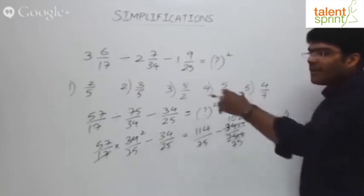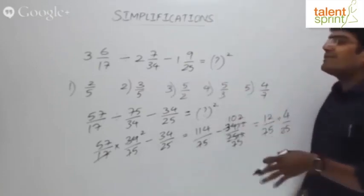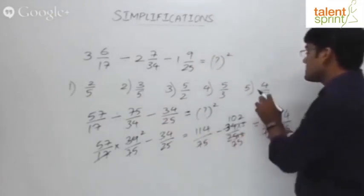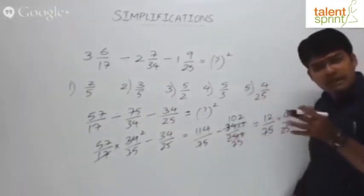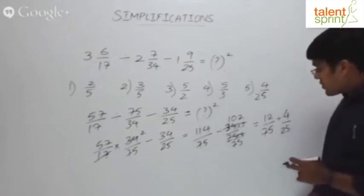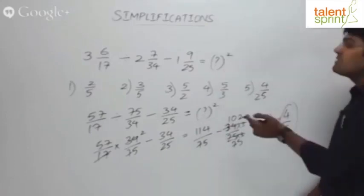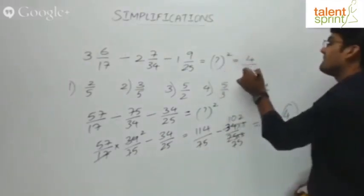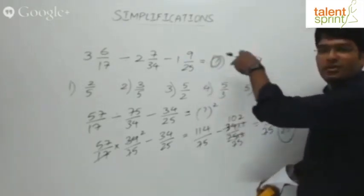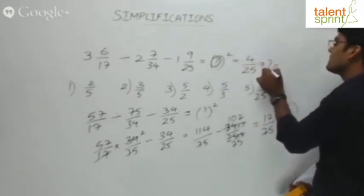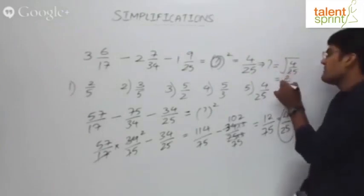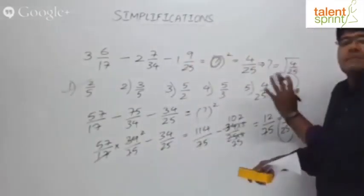So the left-hand side equals 4/25. Now, 4/25 is not directly in the options. Many students might mistakenly mark 4/25 as the answer if it were listed — but remember, the right-hand side is question mark squared. So we have question mark squared = 4/25. Taking the square root of both sides: question mark = √(4/25) = 2/5. Hence the correct answer is option 1.